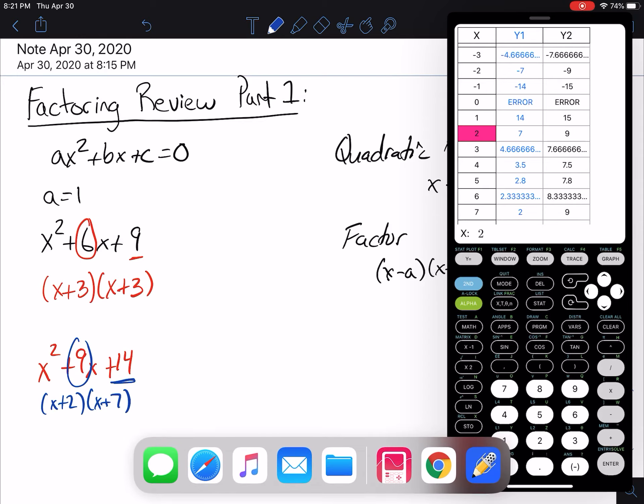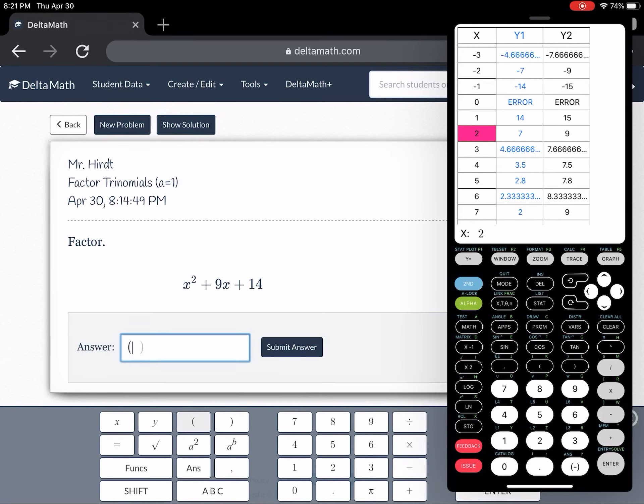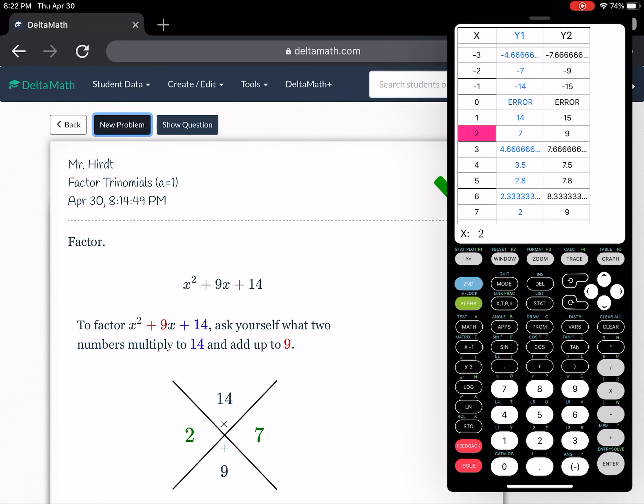So let's go back to delta math, and let's see how we can input this answer. So we need to use parentheses. We want to use our x. So x plus 2, close parentheses, and then x plus 7. Don't forget to close your parentheses. We're going to submit our answer, we get the green check.